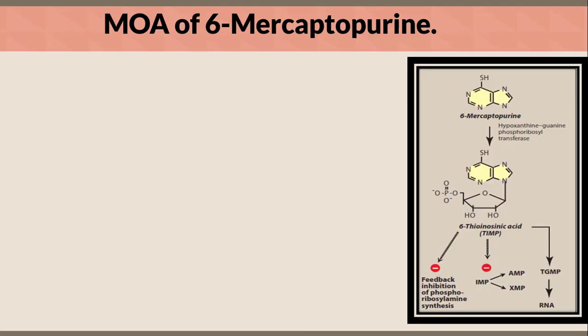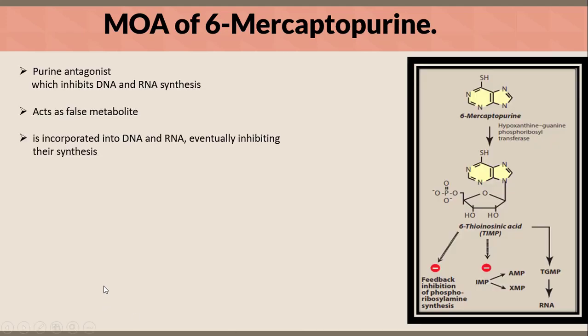Mechanism of action of 6-mercaptopurine. 6-mercaptopurine is a purine antagonist which inhibits DNA and RNA synthesis and acts as a false metabolite which is incorporated into DNA and RNA, eventually inhibiting their synthesis.